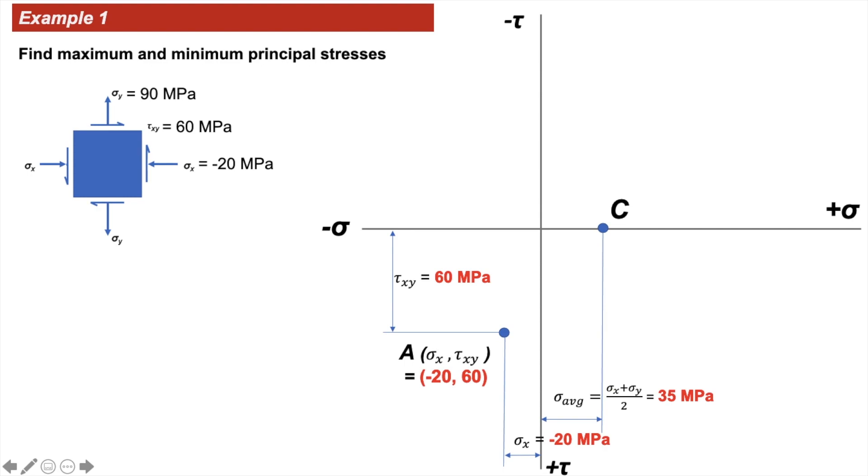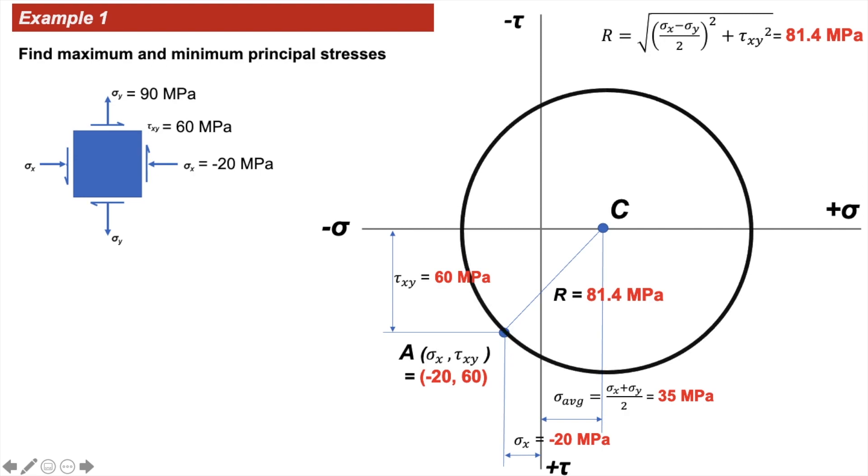Once that is done, we can calculate the radius of our Mohr's Circle as shown in the slide. We get a radius of 81.4 MPa. Now draw the Mohr's Circle.